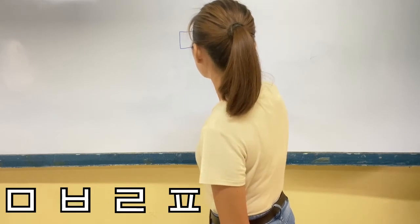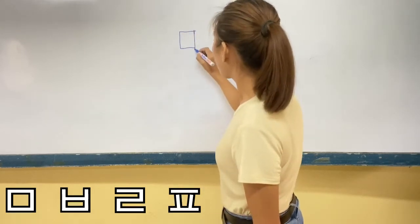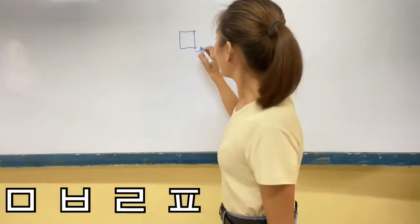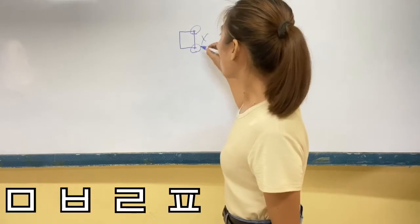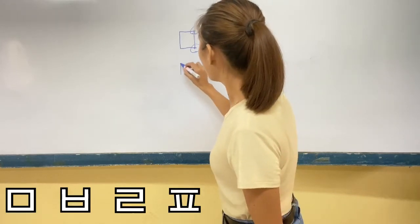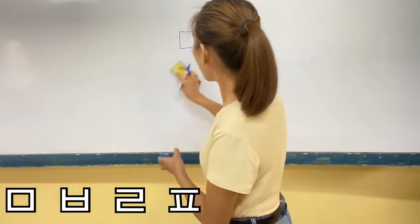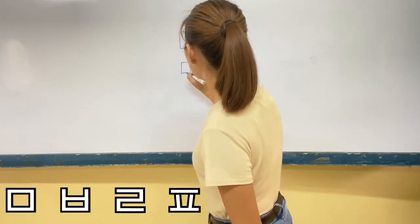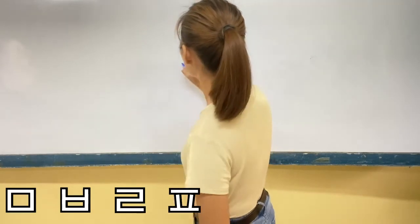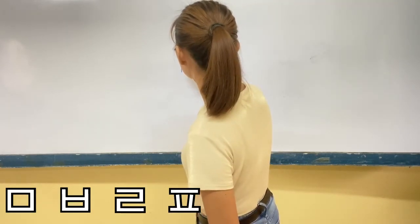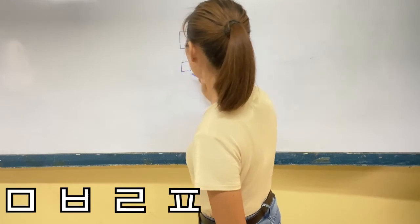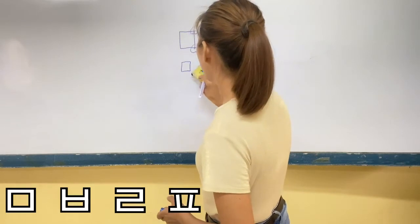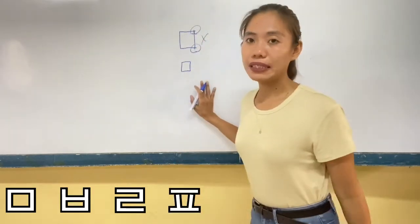If this happens to your character, it will look like this, which is wrong. So make sure you execute it properly, follow the stroke and write correctly. ㄴ has only three strokes — the first stroke, the second, and the third. Make sure there is no overlapping of lines.